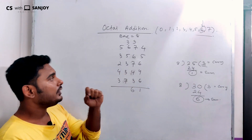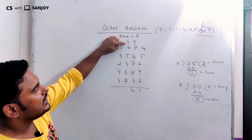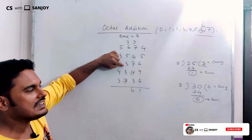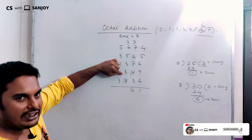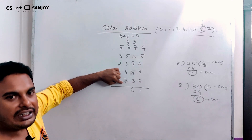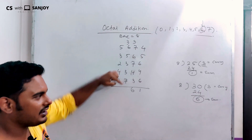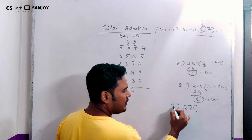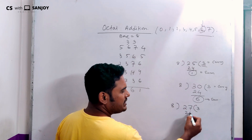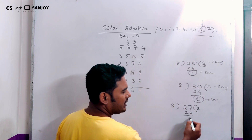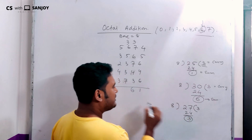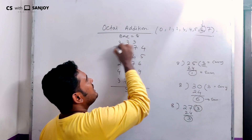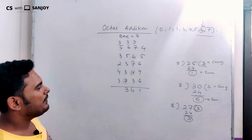Now again: 3 plus 6 is 9, plus 5 is 14, plus 3 is 17, plus 3 is 20, plus 7 is 27. So we have 27. 27 divided by 8: 3 times 8 is 24, remainder is 3. Sum digit is 3, carry is 3.